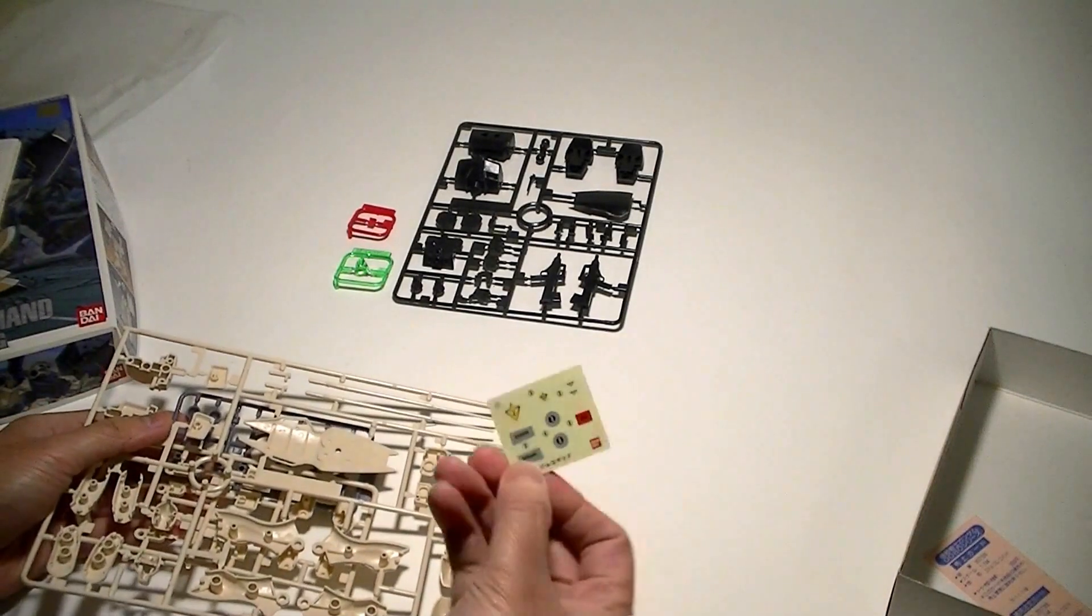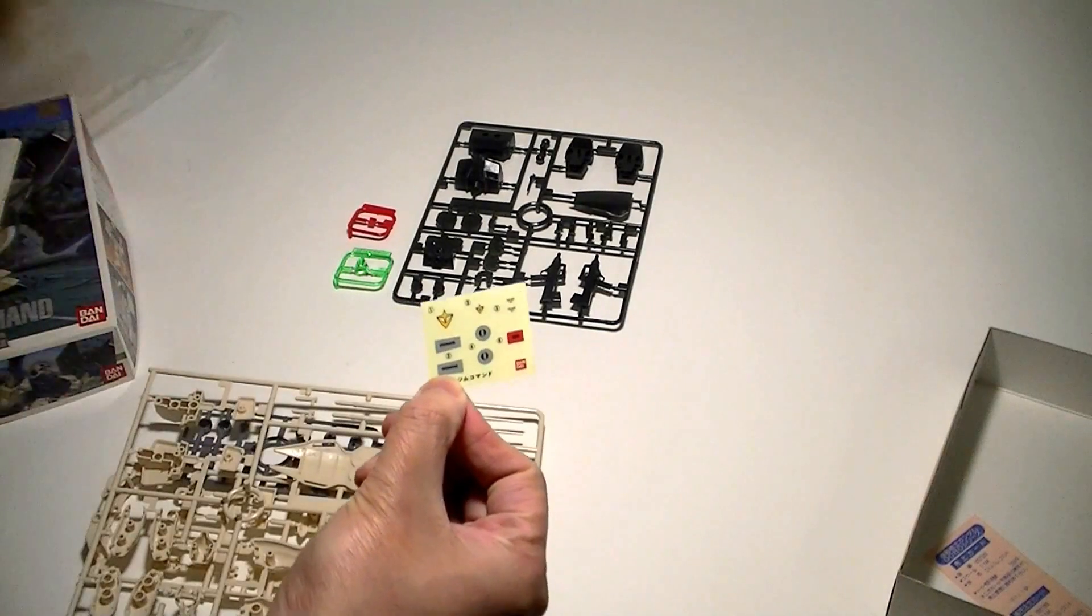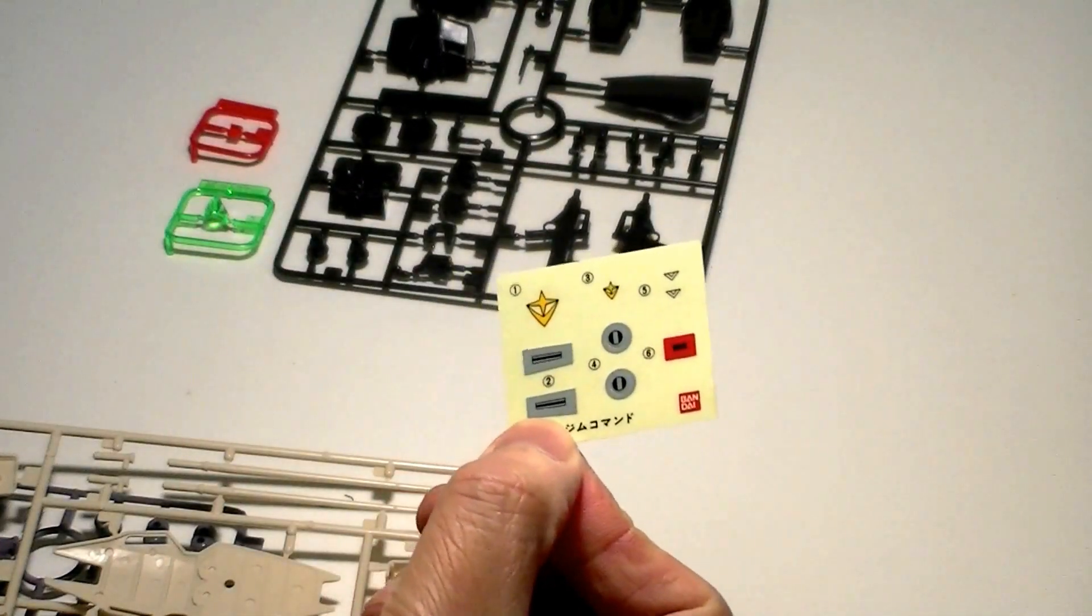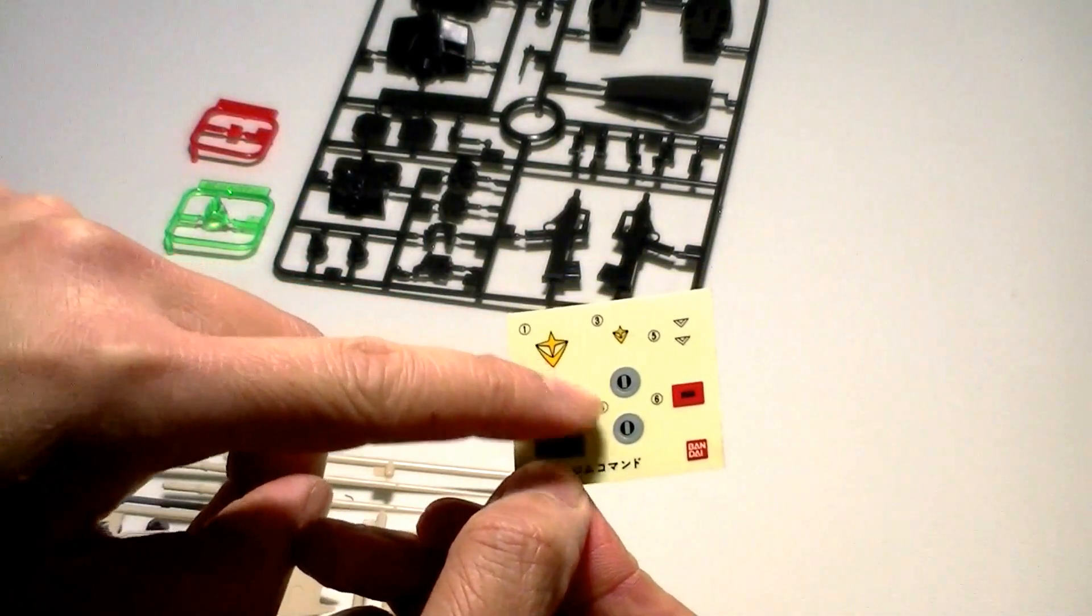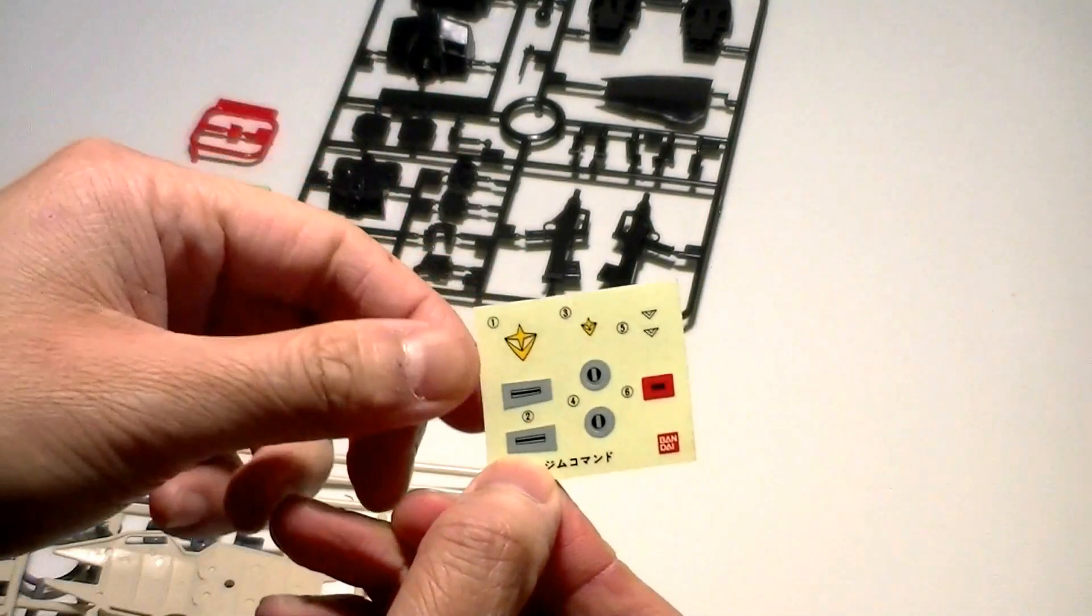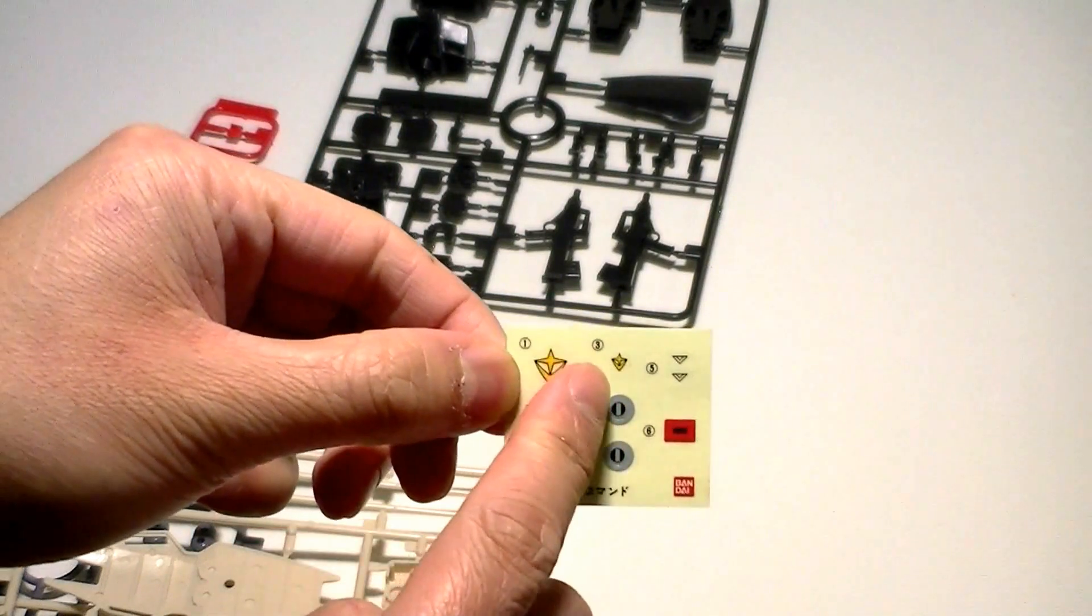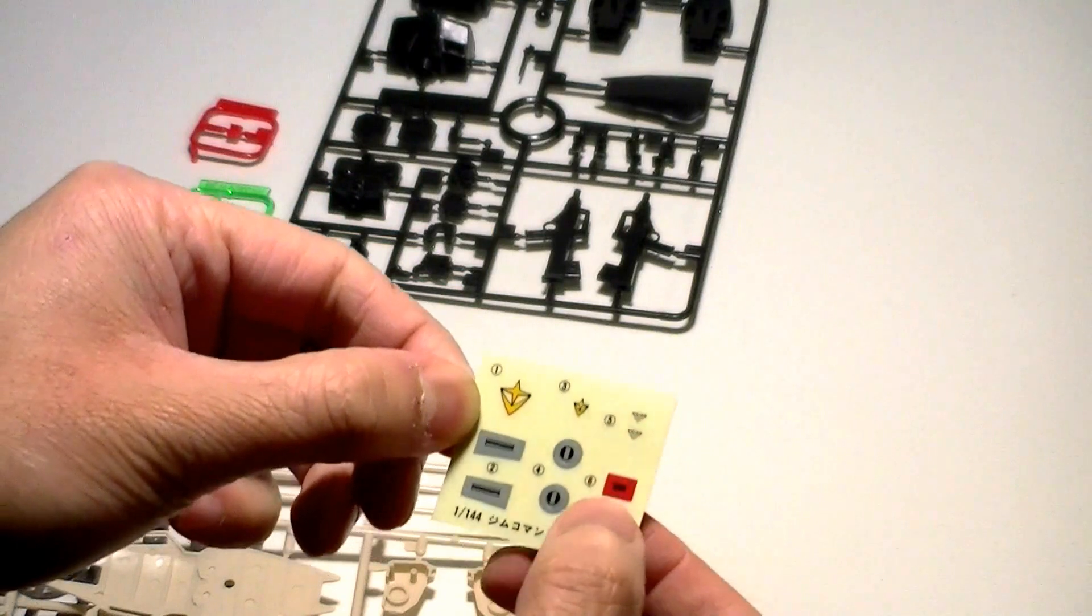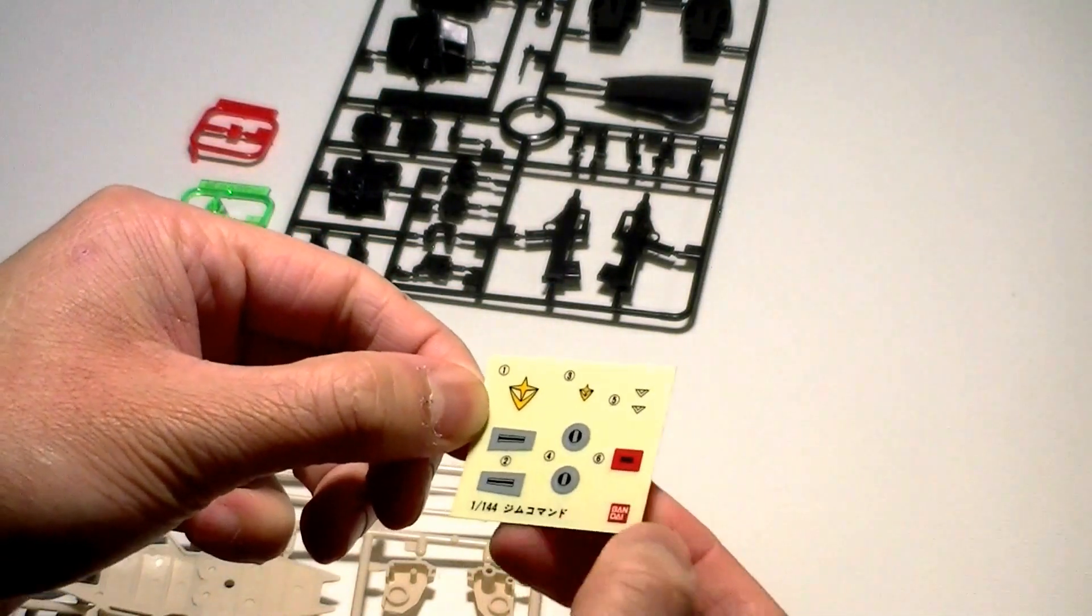Here are the stickers for the kit. Not too many. Some stickers for the vents on chest. These are shields. Emblem for the shield and on the chest. Some triangles for the legs, some details. And I think this is part for the crotch armor. But that's it.